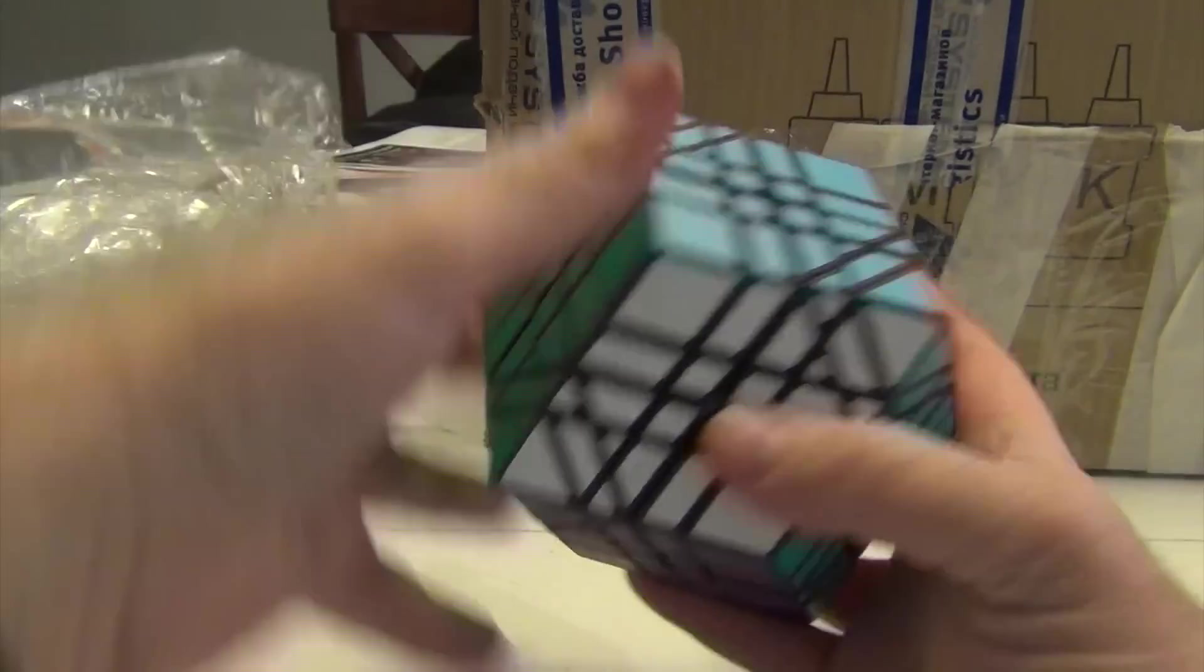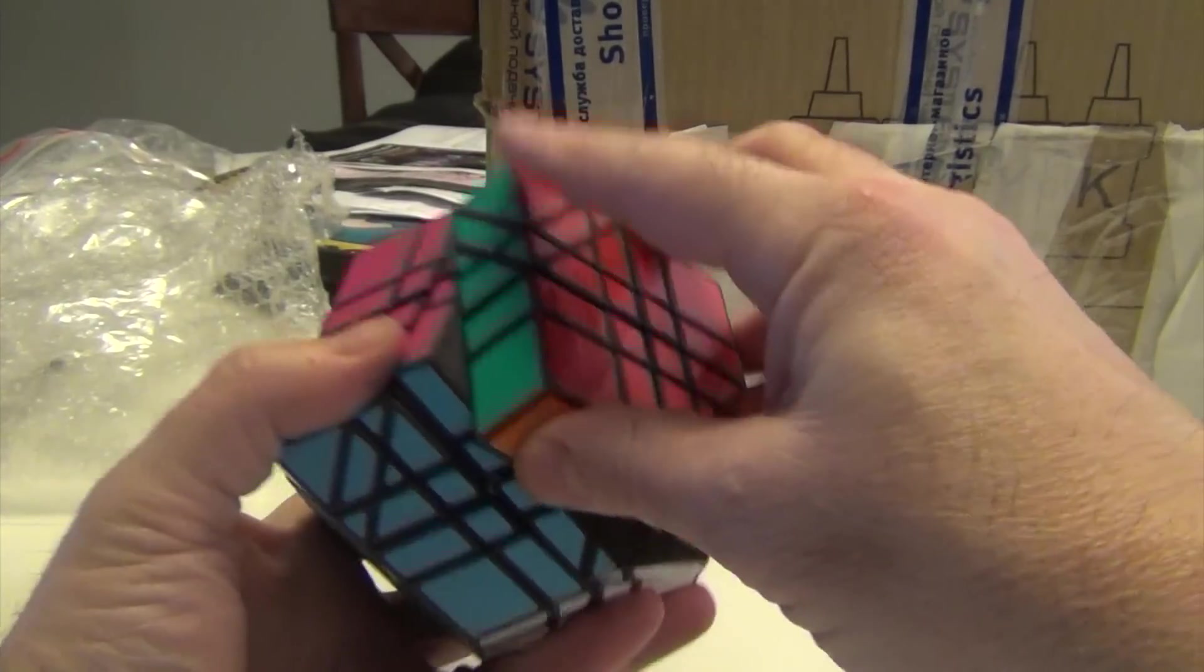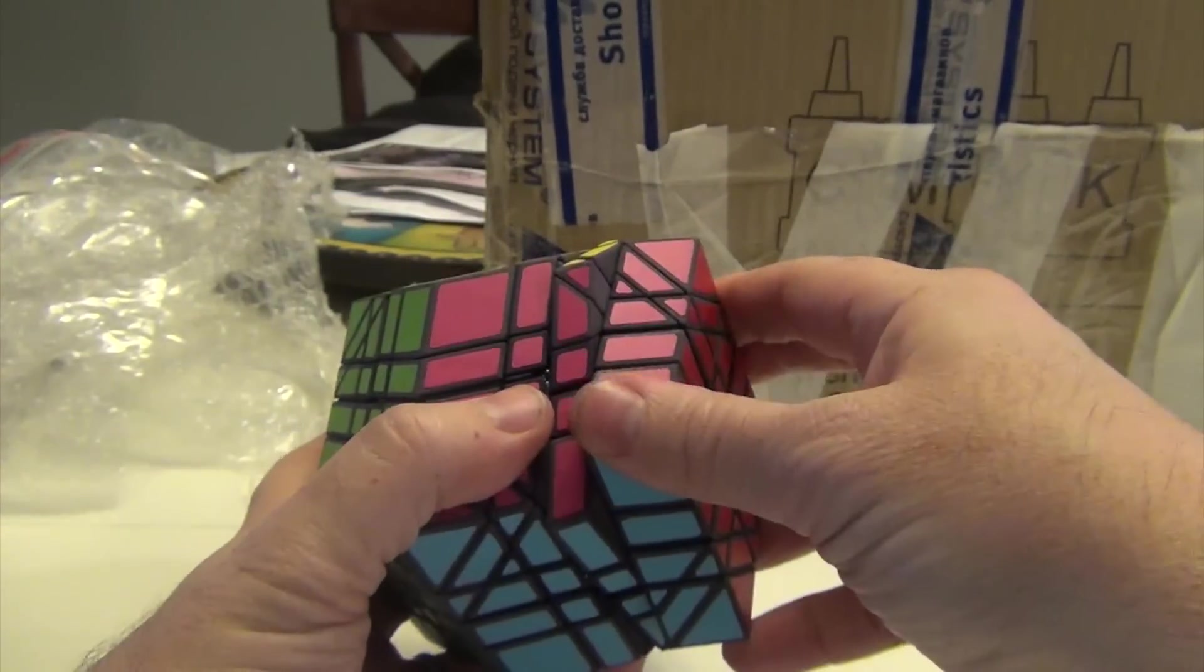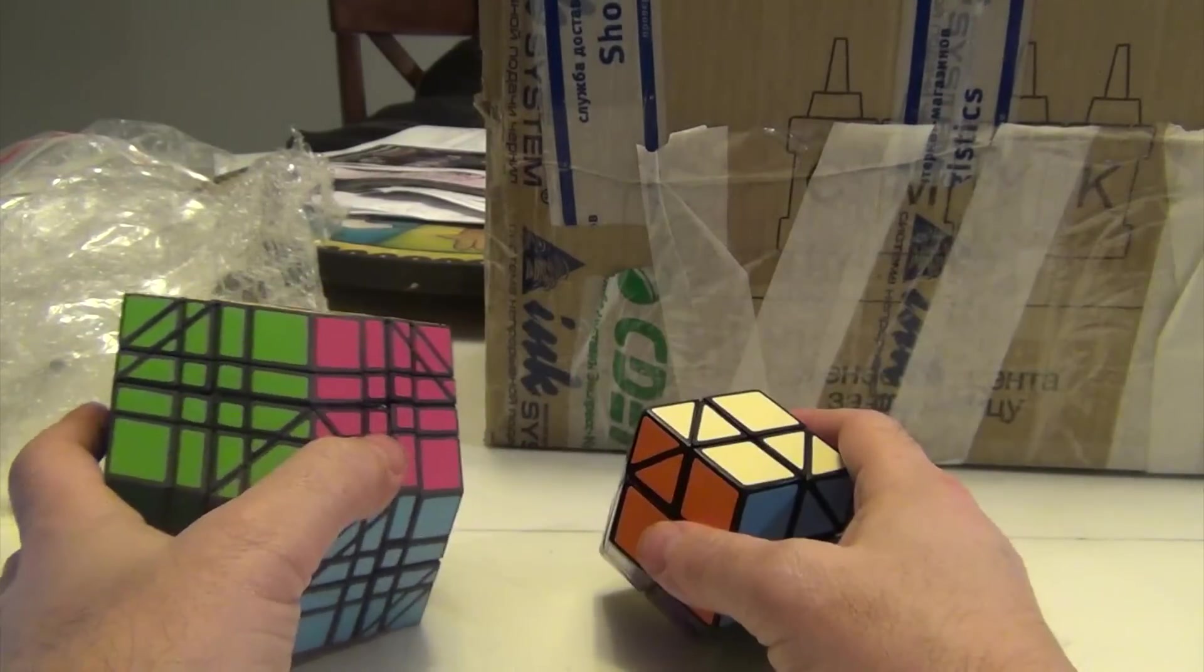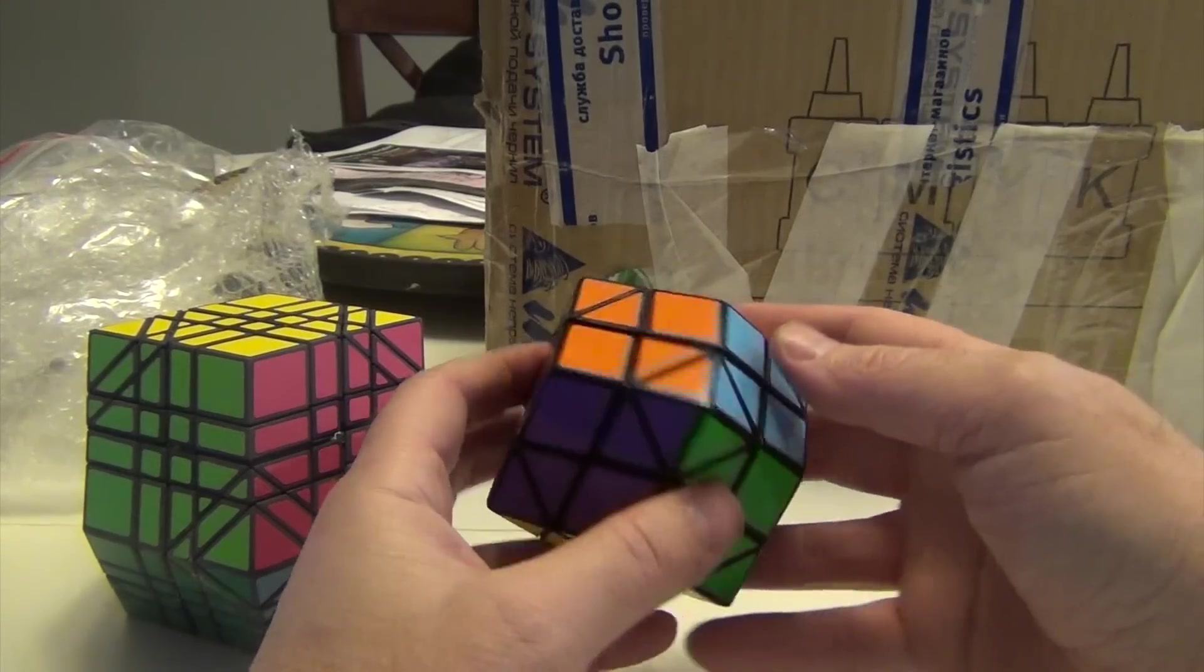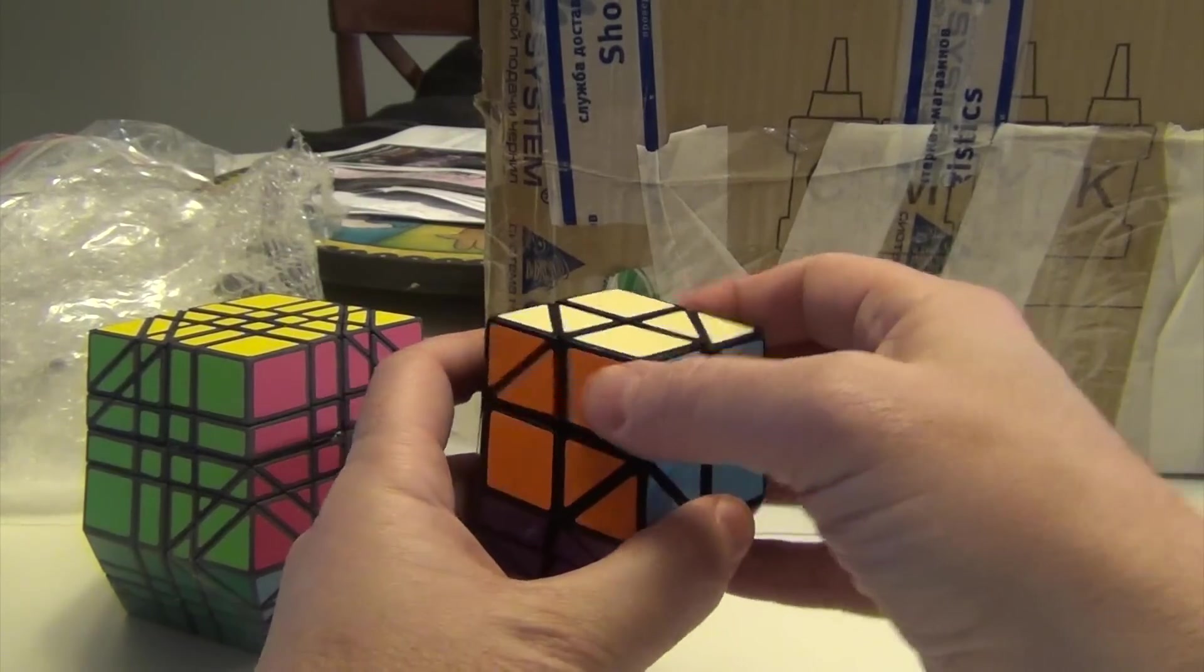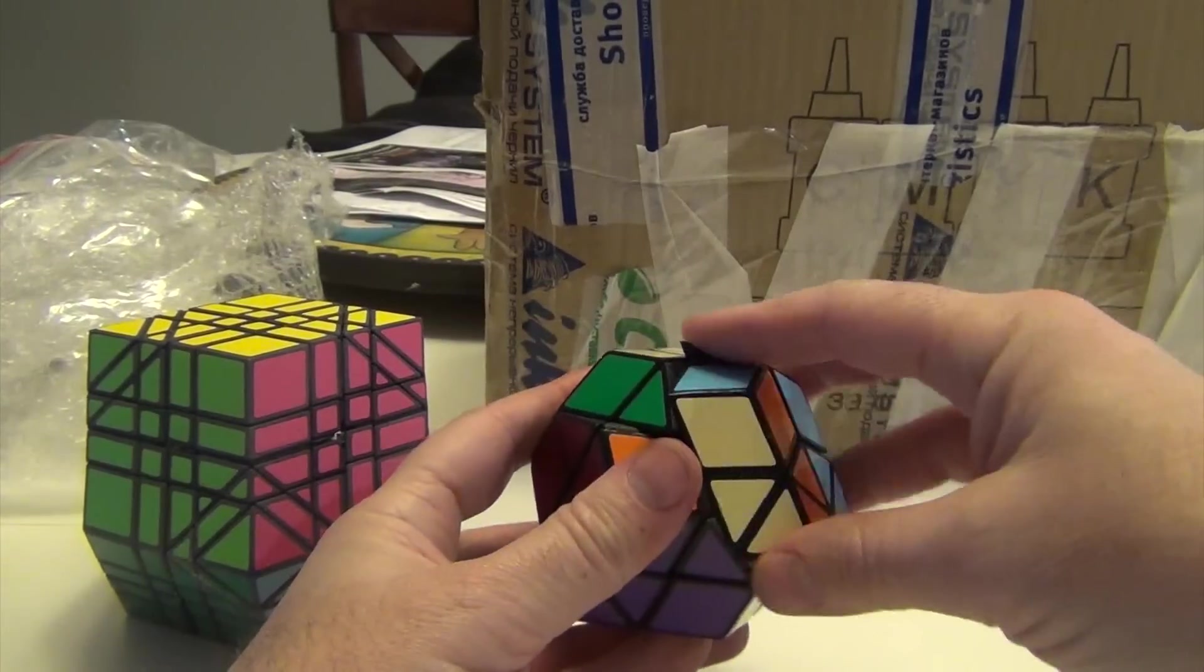So this handsome devil. Whoa it's a big puzzle. It's called the Master Rua. And this is laser 3D printed. So this is a master version of the Rua puzzle which is this guy over here. And these are face turning rhombic dodecahedrons.